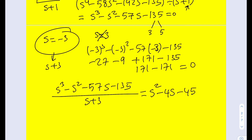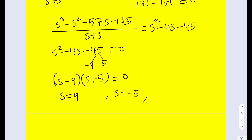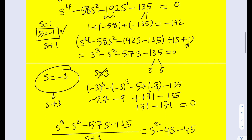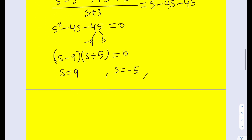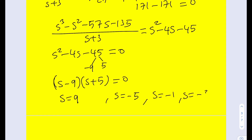We've gone from a quartic to a quadratic, which we can easily solve. The quadratic s² − 4s − 45 is factorable — we need two factors whose sum is −4 and product is −45: those are −9 and 5. So we get (s − 9)(s + 5) = 0, giving s = 9 and s = −5. Combined with our earlier solutions, the full list is s = −1, −3, −5, 9.